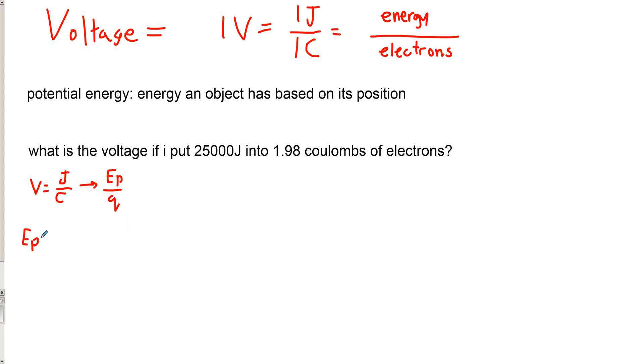And my q, my charge, is 1.98 coulombs. So quite simply we're going to put our joules number on top, we're going to get our coulombs number on the bottom. We do the division, whatever number that is, that's the amount of voltage.